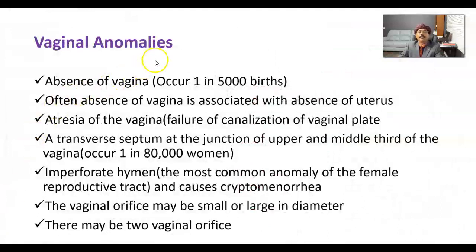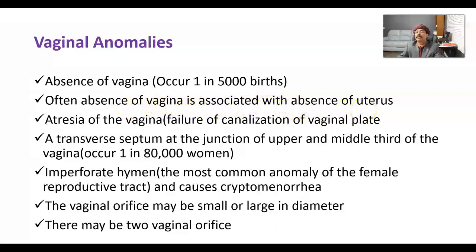Vaginal anomalies: absence of the vagina occurs once in 5,000 live births. Often, absence of the vagina is associated with absence of the uterus, because the uterovaginal primordium is essential for development of the vagina from the sino-vaginal bulbs or vaginal plate — one induces the development of the other. If there is no vagina, usually there is no uterus, and if there is no uterus, there is no complete vagina.